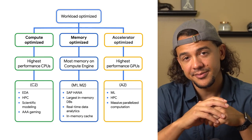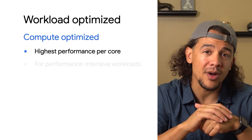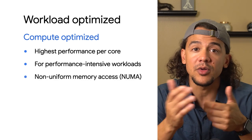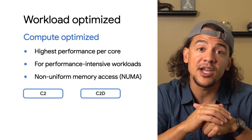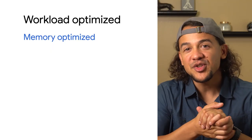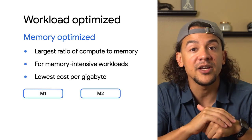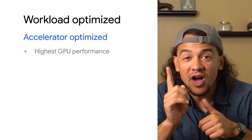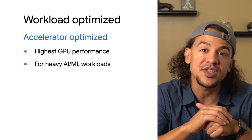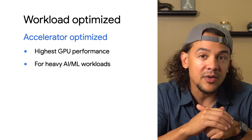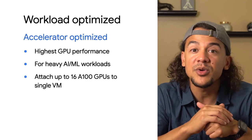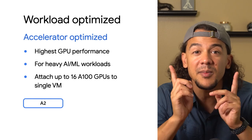As for workload-optimized machines, there are three families. Compute-optimized machines offer the highest consistent performance per core, ideal for performance-intensive workloads. C2 VMs utilize features like non-uniform memory access to achieve the highest performance. Memory-optimized machines are best suited for memory-intensive applications, providing the largest ratio of compute-to-memory and the lowest cost per gigabyte, with SAP-certified machines up to 12 terabytes. Accelerator-optimized machines offer the highest GPU performance for AI and machine learning workloads — Google Cloud is the first platform to attach 16 A100 GPUs to a single VM.